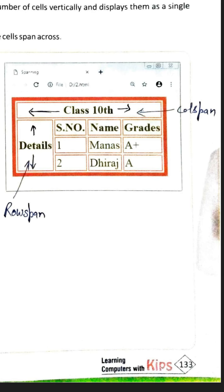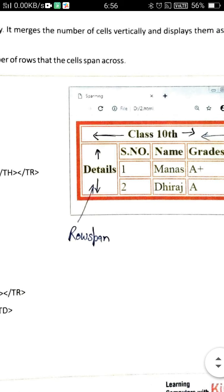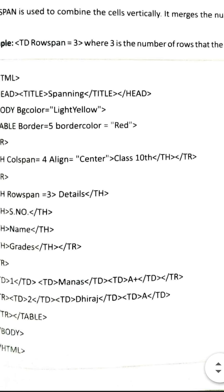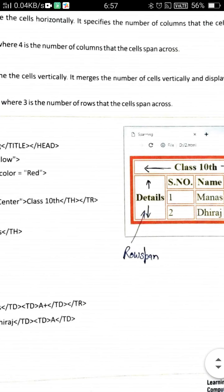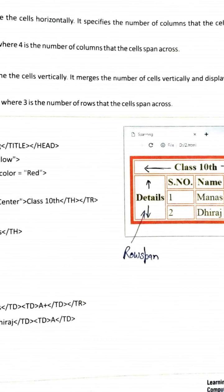This program is very important. If you look at the last two or three years' question papers, this kind of web page is given and you are asked to write the program for making such a web page. Looking at the program: after the body tag, the table tag is started with border equal five and border color equal red. You can see the border color is red and border width is five.